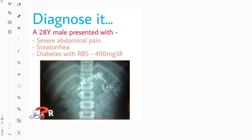On doing the abdominal X-ray, we got this picture which you can see in front of you, showing some kind of pathology around the pancreas. The pancreatic shadow is looking white, which is not the normal color. This white shadow shows the presence of calcification in the pancreas.